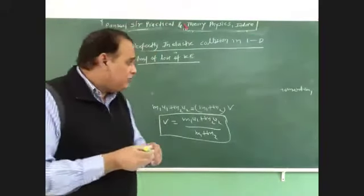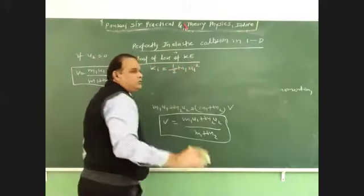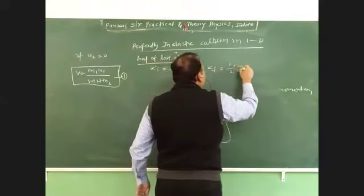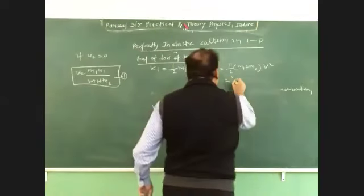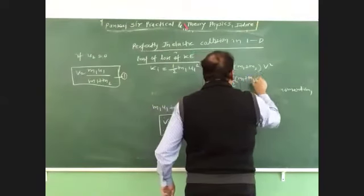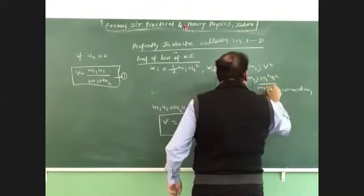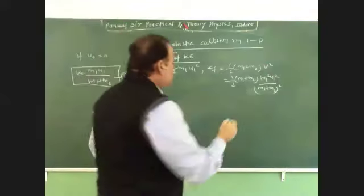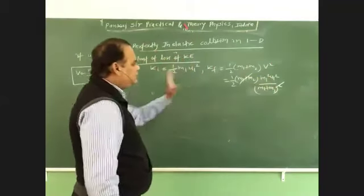We find initial kinetic energy, Ki is half M1 U1 square, U2 is already at rest, and Kf is half M1 plus M2 into V square. And V is this. So half M1 plus M2, M1 square U1 square, upon M1 plus M2 square. So, M1 plus M2 and this is cancel out, we will have M1 square U1 square upon 2 M1 plus M2.